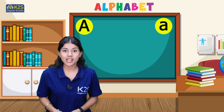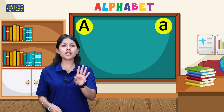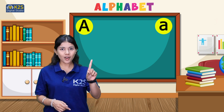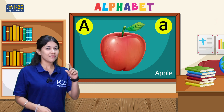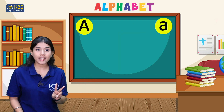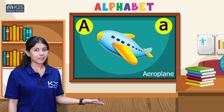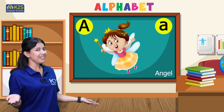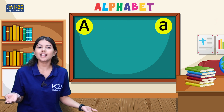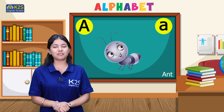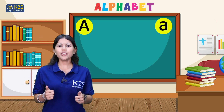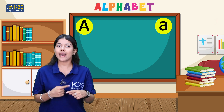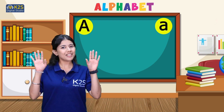Today we learned four new words which start with letter A. Let's recall them: first, apple; second, aeroplane; third, angel; and fourth and the last one is ant. You did a great job today! We will meet in our next session. Till then, goodbye.